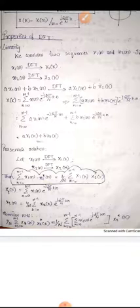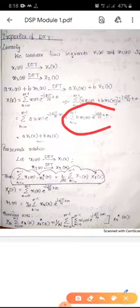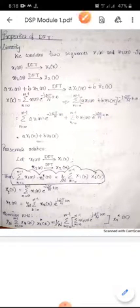Expanding the bracket: A · sigma N=0 to N-1 of X1(N) · e^(−j2π/N · K) + B · sigma N=0 to N-1 of X2(N) · e^(−j2π/N · K). The first summation is the DFT of X1(N), which equals X1(K). The second summation is the DFT of X2(N), which equals X2(K). So the result is A·X1(K) + B·X2(K). That is all about the linearity property.